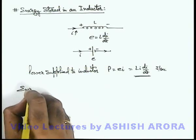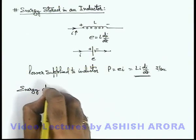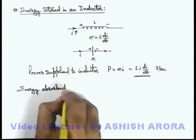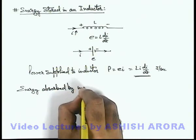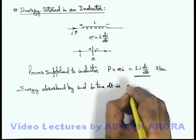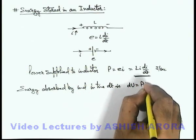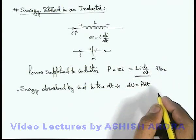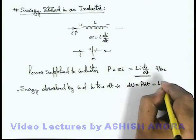Energy absorbed by the inductor in time dt is dU = P dt. Since P is the energy supplied per unit time, this can be written as Li di.